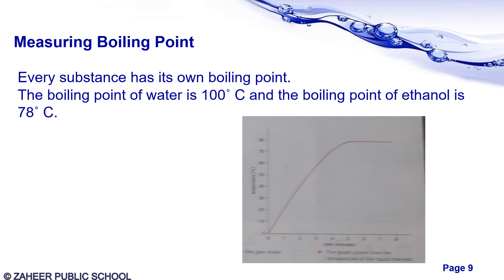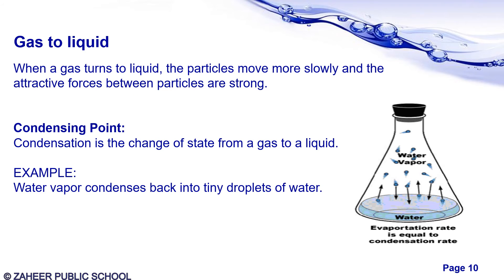Now, measuring the boiling point of a liquid: every substance has its own boiling point. The boiling point of water is 100 degrees centigrade and the boiling point of ethanol is 78 degrees centigrade, which is below the boiling point of water. If you want to boil different substances, you can observe them using their different boiling points.